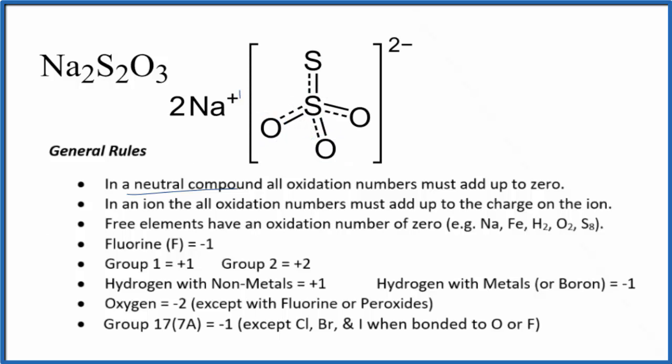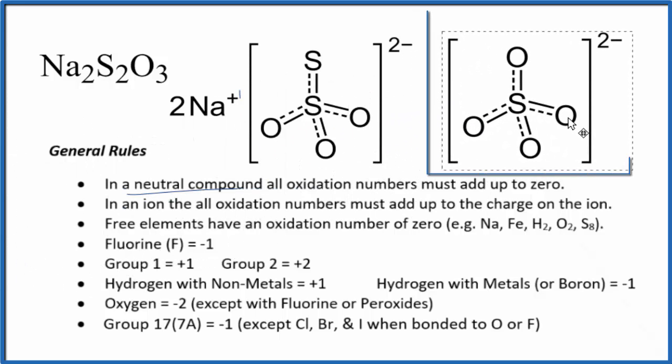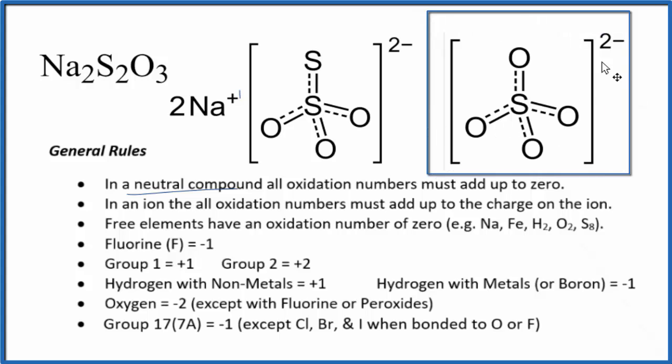A good way to look at this is to look at a similar compound. Here's the sulfate ion, SO4, two minus. Sulfur and oxygen are in the same group. They're right next to each other. So if we can figure out the oxidation number on the sulfur, that'll help us understand what's going on here.